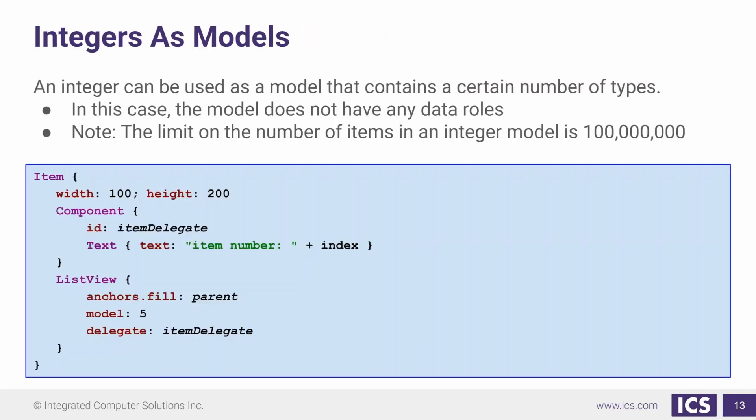So far we looked at our list model to provide data, but we can also use a number as the model. Here is an item that has a component, which is a text item. Components were one way to create custom items, and these generally happen within the file in the context of model-view. Our component is just a text item that says the item number and then the index. The index is provided by the model itself — it's a special data role available when using a number as the model. If we were to run this, we would just get a list of item number and then each index. You cannot use more than 100 million for your number, so try to keep it below that.